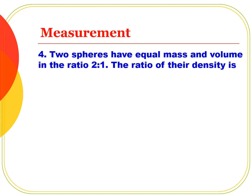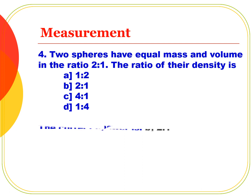Two spheres have equal mass and volumes in the ratio 2:1. The ratio of their densities is: Option A: 1:2, Option B: 2:1, Option C: 4:1, Option D: 1:4. Since density = mass/volume and mass is equal, the ratio of densities equals the inverse ratio of volumes — which gives 2:1. The correct answer is Option B, 2:1.